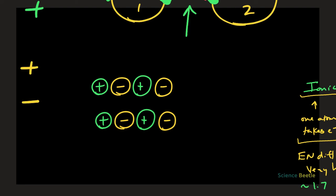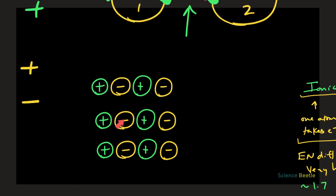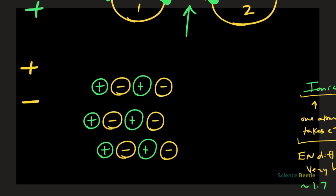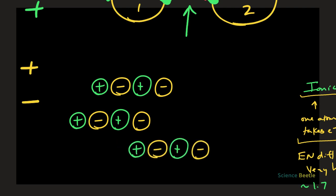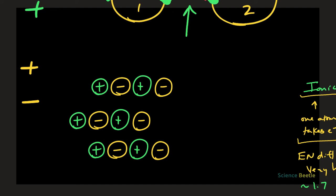A typical exam question might ask whether a given drawing is correct. When you look at a structure, if you see a positive charge next to another positive charge, that's a repulsive force — just like a negative next to a negative would repel. That's not ideal. What you want to do is make sure you alternate the charges so that you have the maximum number of attractions and you're minimizing the repulsions that occur.